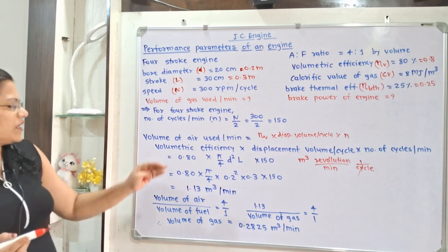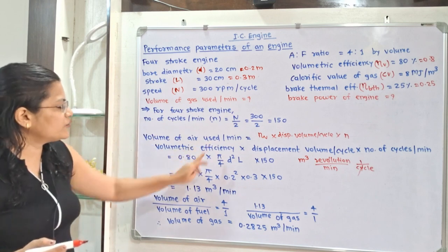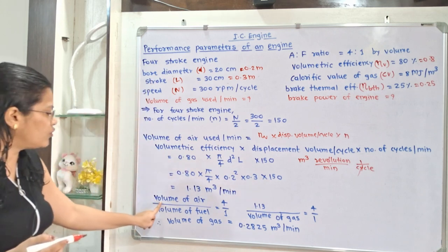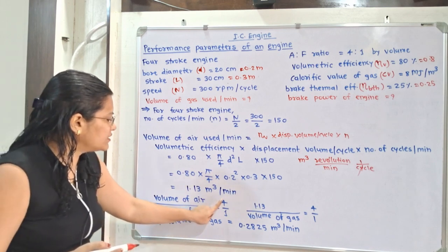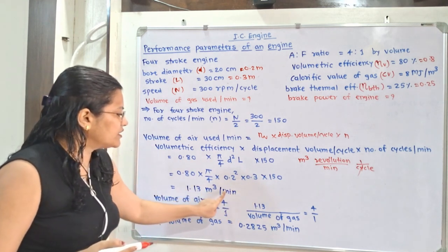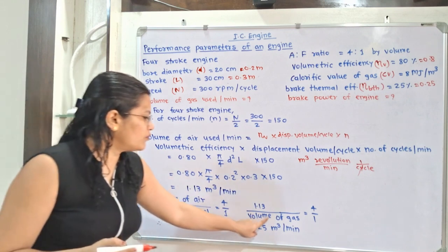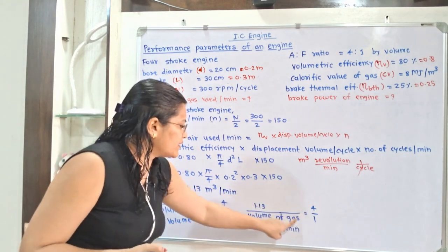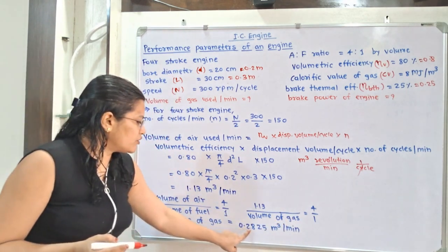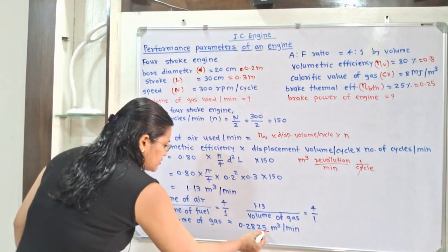Now we find the volume of gas used. Volume of air is calculated as 1.13 meter cube per minute. From the air-fuel ratio by volume, volume of air divided by volume of fuel equals 4 by 1. Here, fuel means gas. So by cross multiplication, volume of gas used equals 0.2825 meter cube per minute. This is the answer to the first part.